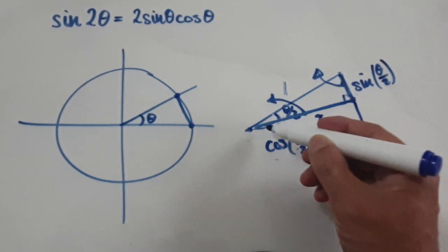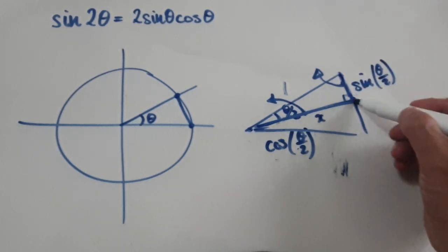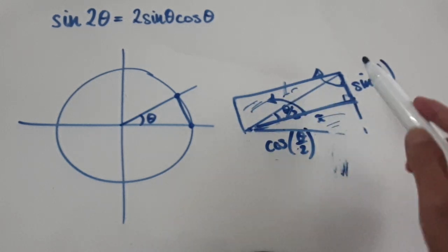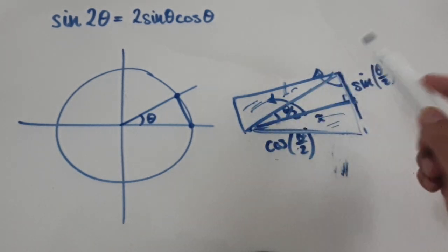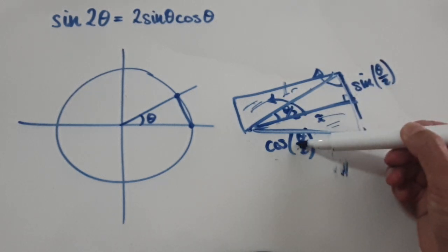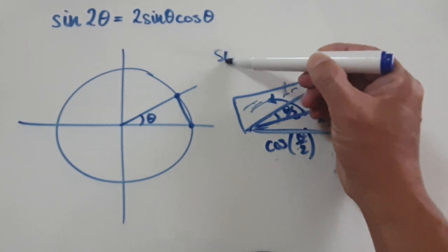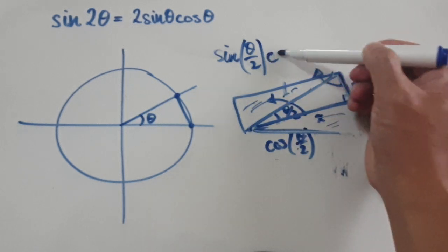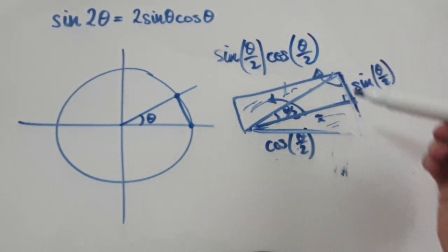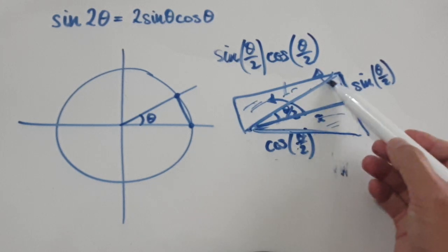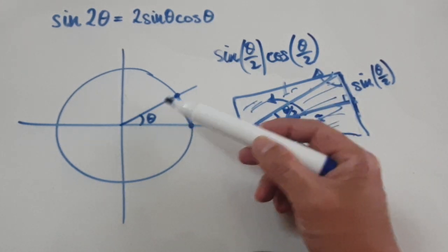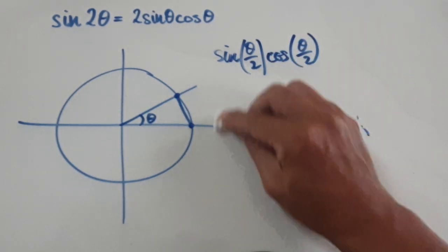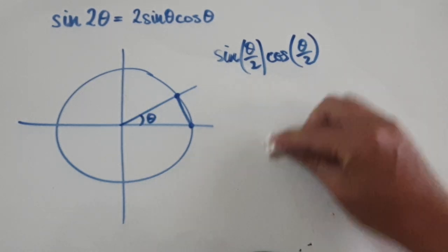To work out the area of this triangle you multiply this length by this length — that gives you a rectangle — and then halve it. So the area of the triangle is sine(theta/2) times cos(theta/2). That is the area of the whole triangle. Now we'll work out the area of that same triangle using a different method, and then we can set the two equal to each other.